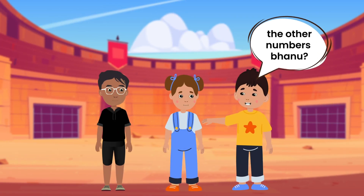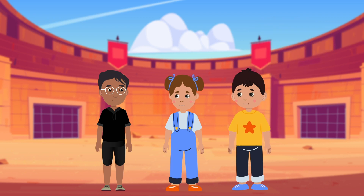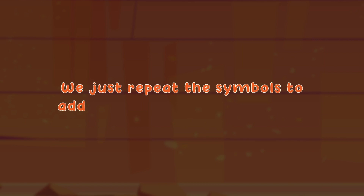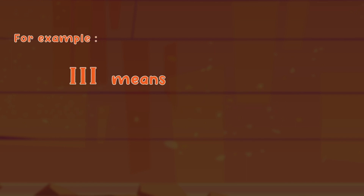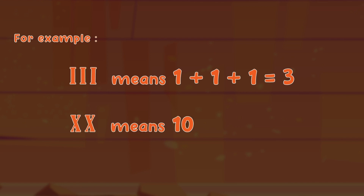How do we show the other numbers, Banu? Good question, Peter. We just repeat the symbols to add them and depict a number. For example, three I's means 1 plus 1 plus 1 equals 3. Similarly, double X means 10 plus 10 equals 20.